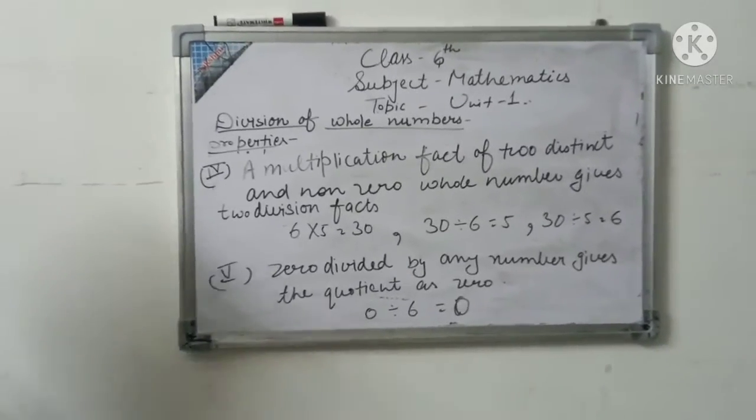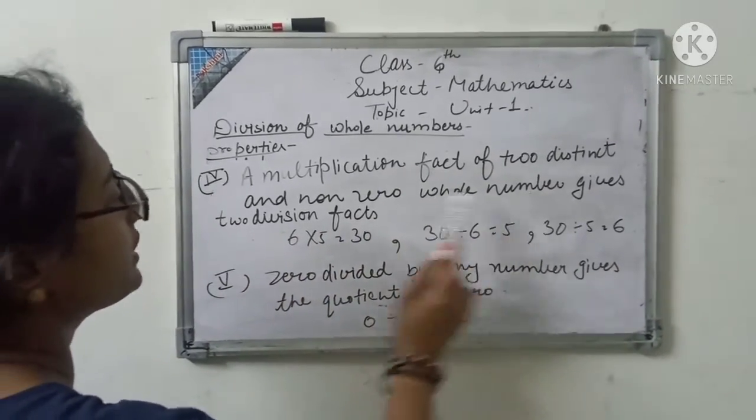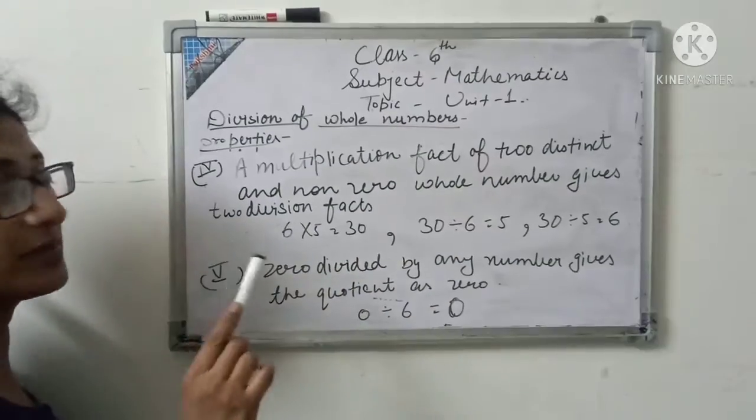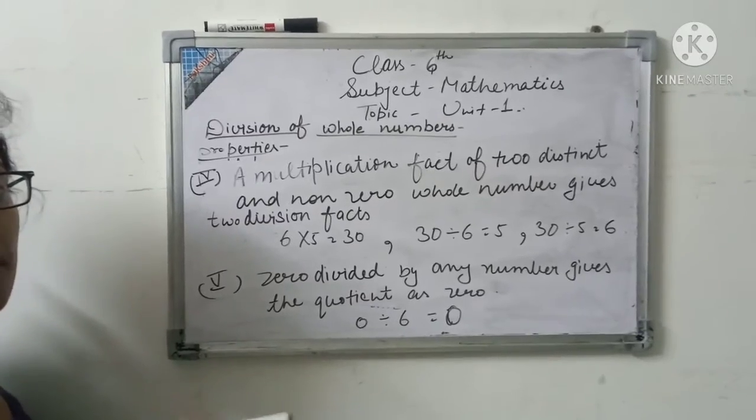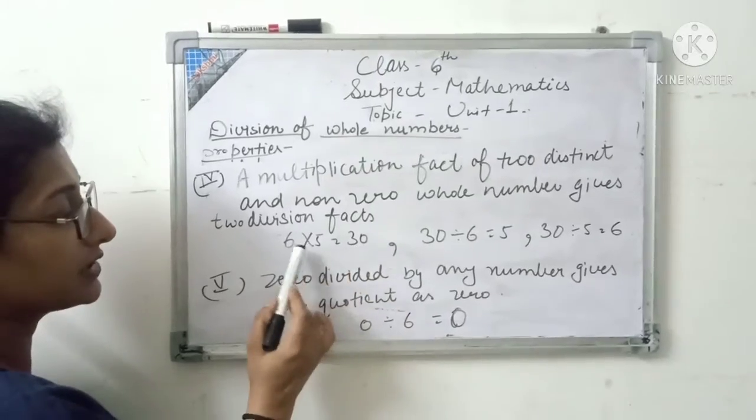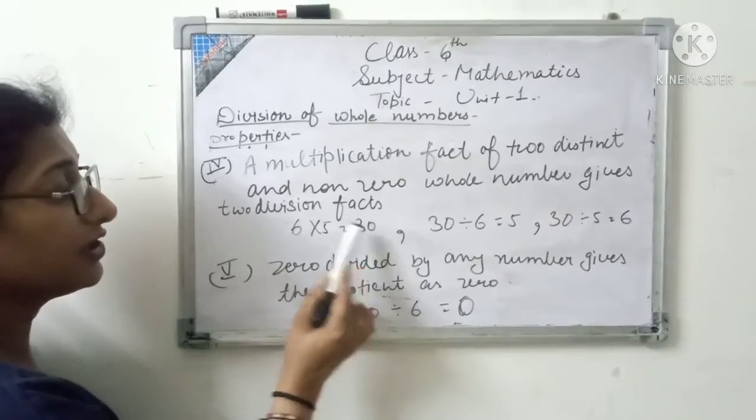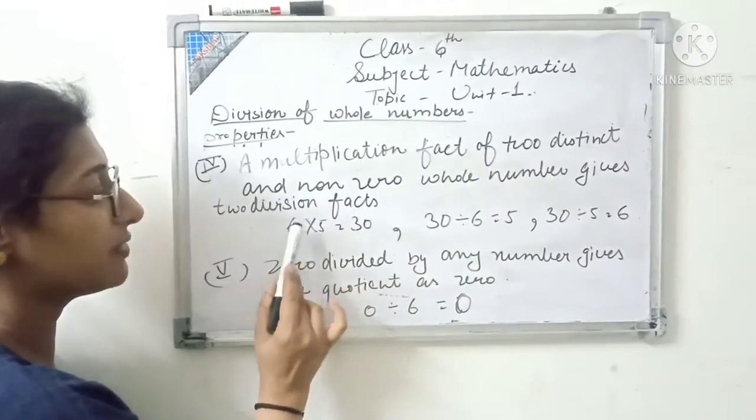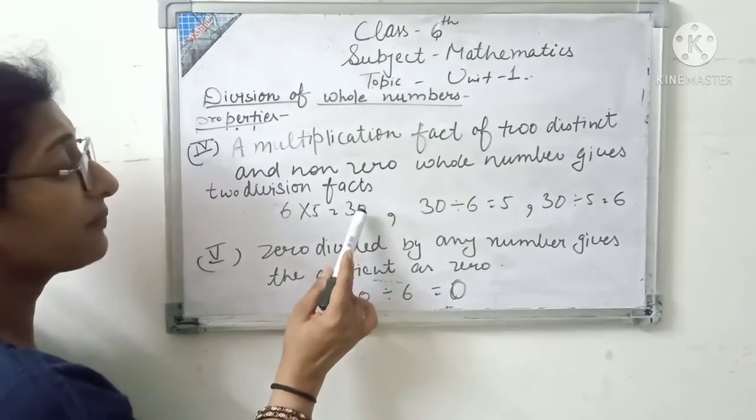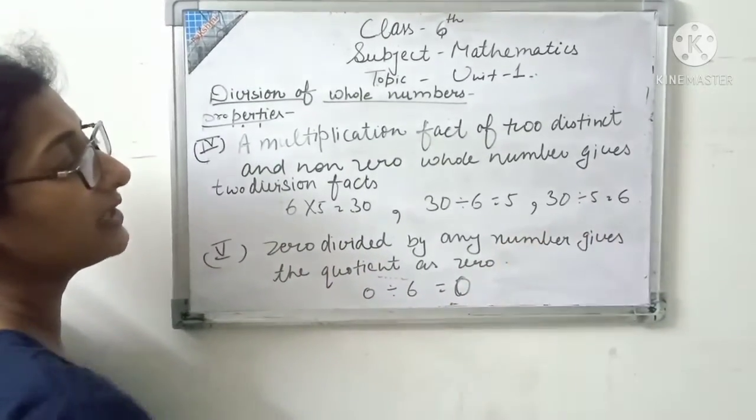Fourth property: a multiplication factor of two distinct and non-zero whole numbers gives two division factors. For example: 6 times 5 equals 30. The division factors are: 30 divided by 6 equals 5, and 30 divided by 5 equals 6. Clear?